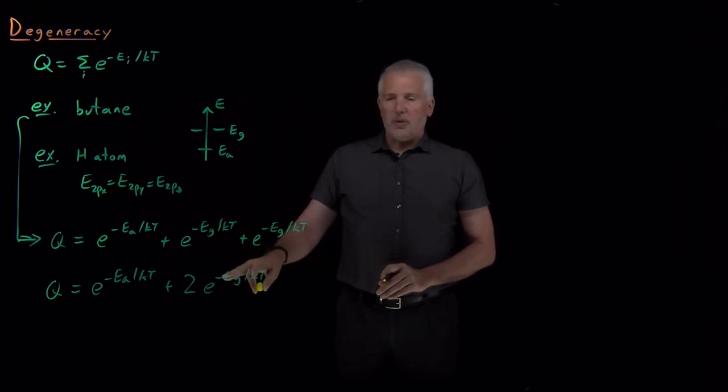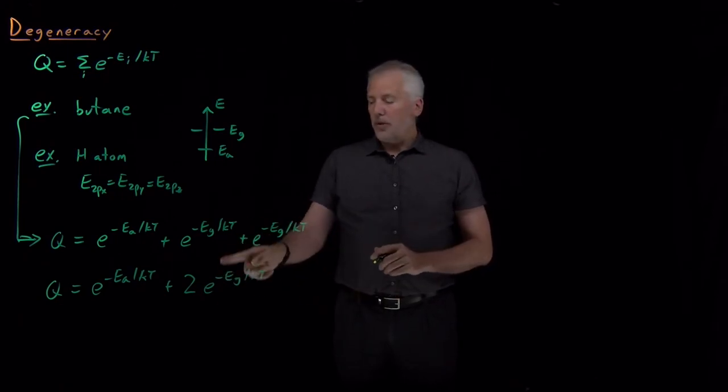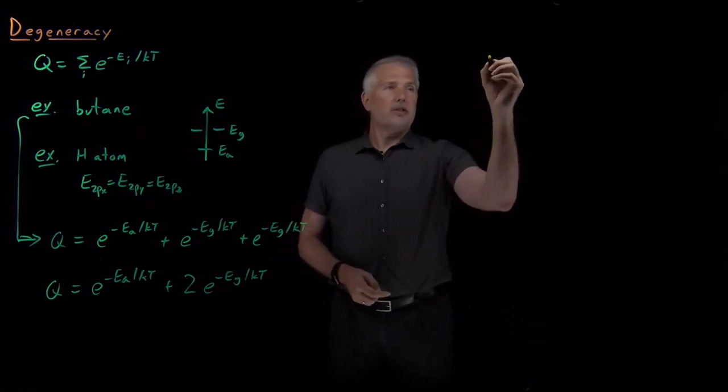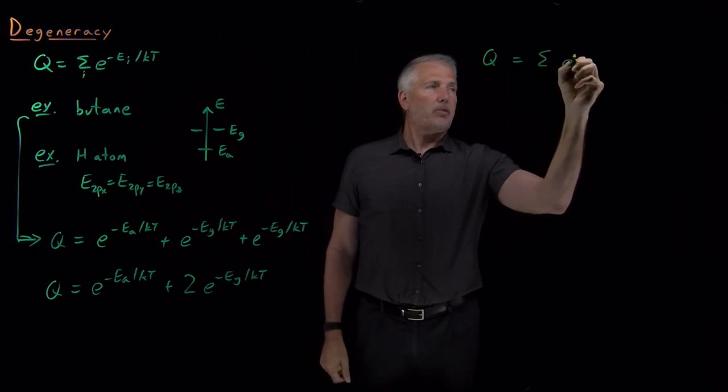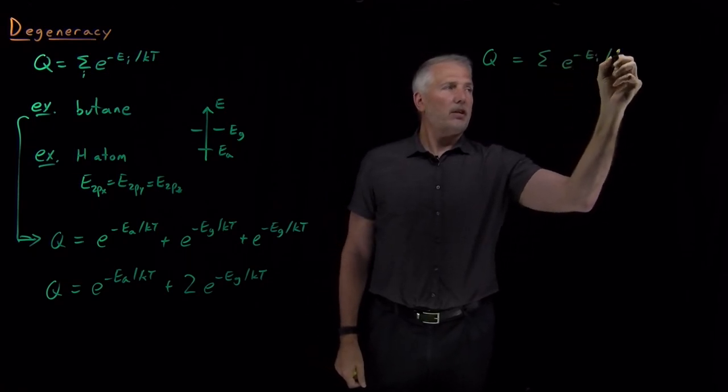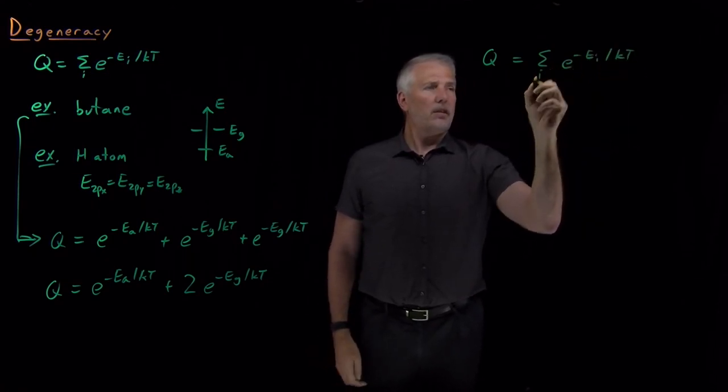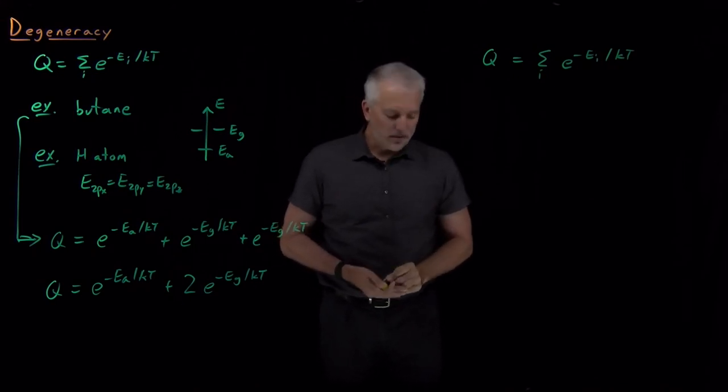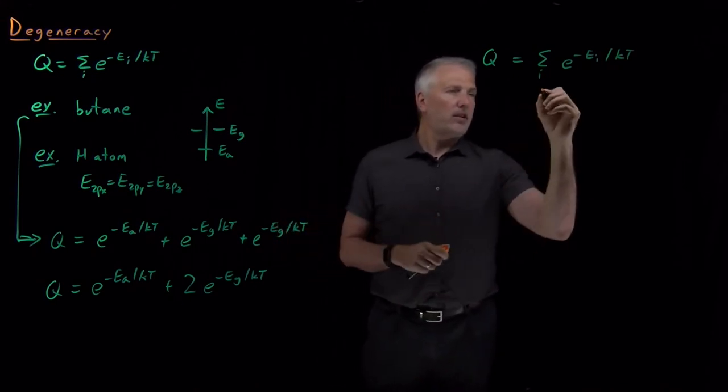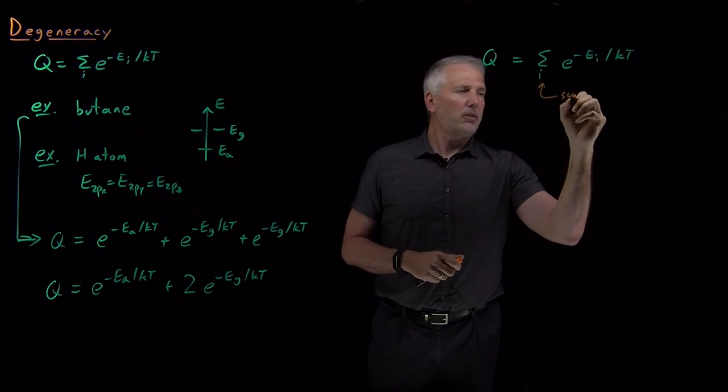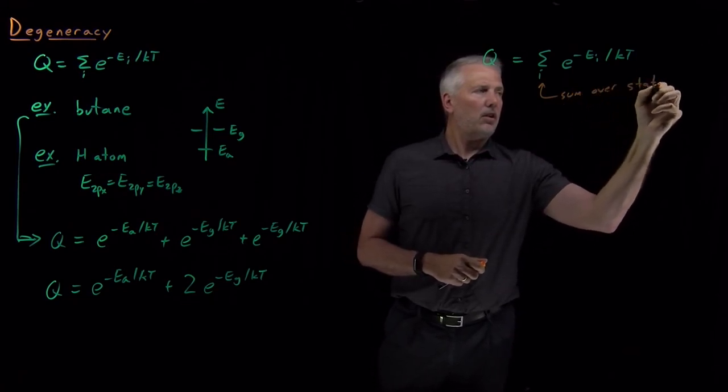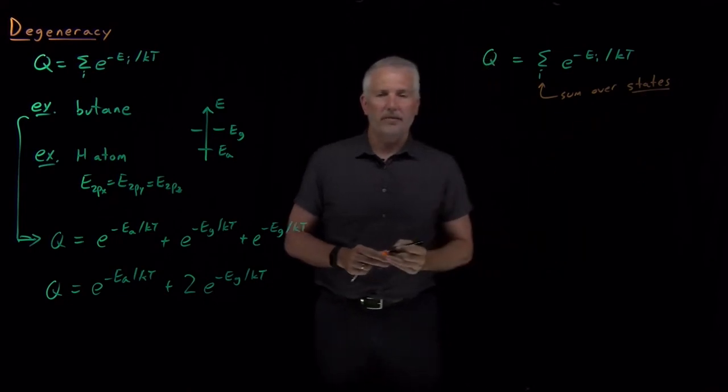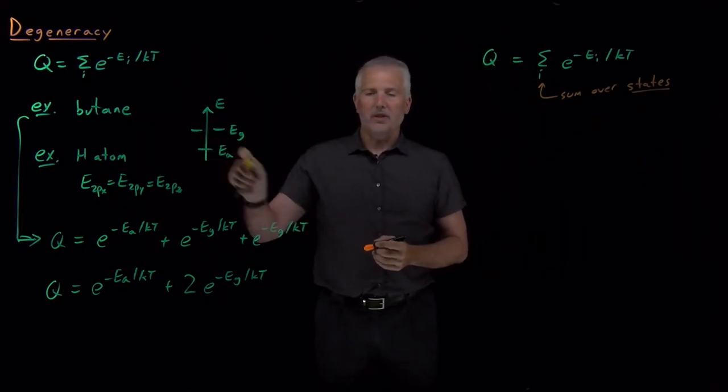We run into that situation fairly often, so these two different ways of writing the partition function. The first one, if we take the sum of a Boltzmann factor for each state of the system, let me emphasize here that we're summing over all the different states that the system can have, Gauche plus and Gauche minus being two different states.